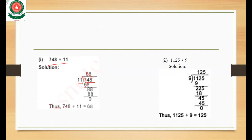First we take two numbers: 74. We multiply 11 with 6, which gives 66 — the number nearest to 74 without exceeding it.